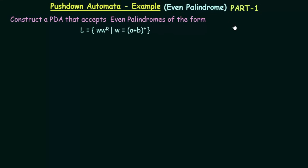In the last lecture we studied the graphical notation of pushdown automata — how we can graphically represent pushdown automata and draw transition diagrams for them. We also studied the meanings of the different symbols used in the graphical notation, and we saw a simple design example. In this lecture, we will see another elaborate example of designing a pushdown automata.